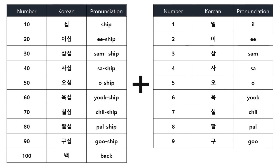You may have noticed from 11 onwards, it's really easy. You just add what is on the left to what is on the right. Take 95 for example — it's 90 on the left with 5 on the right. And that's how you say 95 in Korean. This way you can count all the way up to 100.